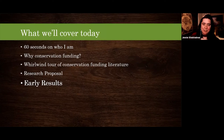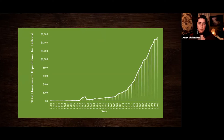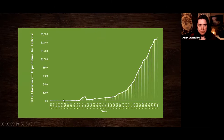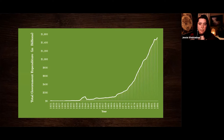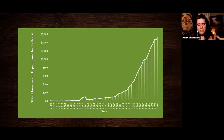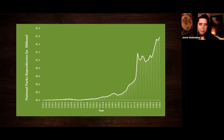I have a few early results to share. The first thing I had to track is total government expenditure at the federal level, since I'm relating everything to overall government spending. You can see a bump over the World War II period and an overall increase in expenditure over time — partly related to GDP growth, and partly because the government's share of the US economy has increased over time.